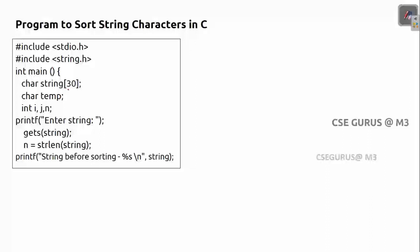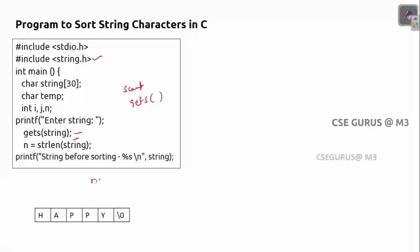I've taken a string with length 30. The program reads the string using gets, which reads spaces as characters unlike scanf, which stops at a space. To read more than one word, we prefer gets. Then n is found using the strlen function from the string.h header, which gives the string length — for 'happy' that is 5, ignoring the null character.